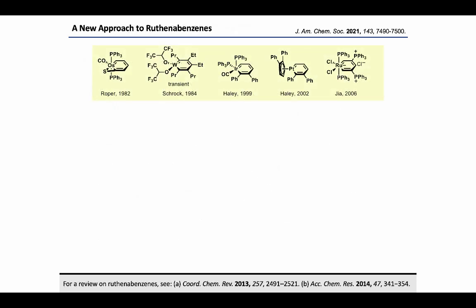Another very interesting class of organometallic compounds involves the metallobenzenes. Metallobenzenes are a class of compounds in which one or more transition metals occupy the benzene ring. The first report was by Roper and co-workers when they isolated osmabenzene. While studying alkyne polymerization reactions, Schrock detected a transient tungstenabenzene. After that, various groups discovered different stable metalabenzine compounds based on iridium, platinum, or ruthenium.